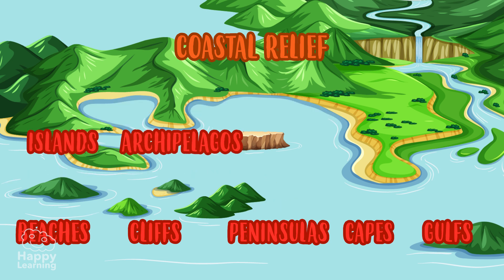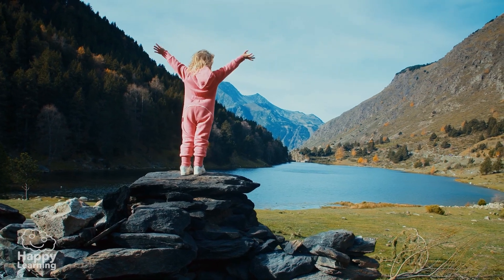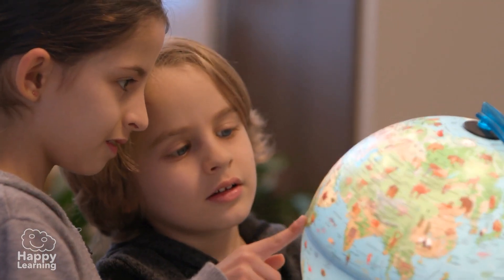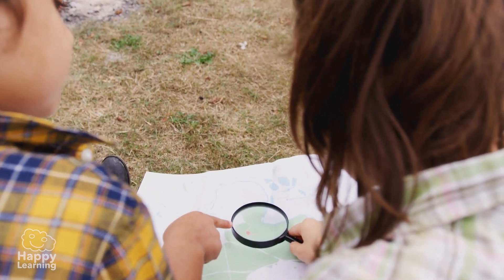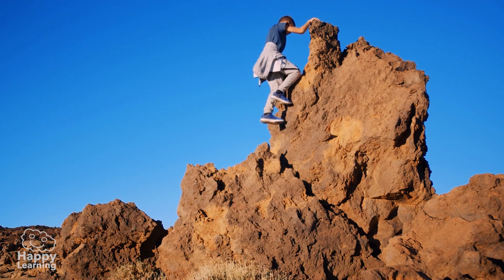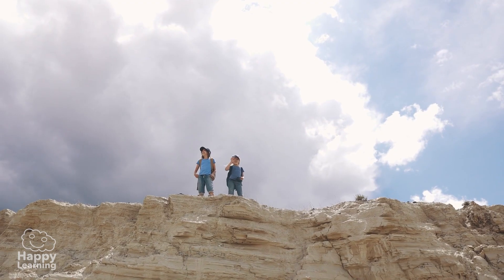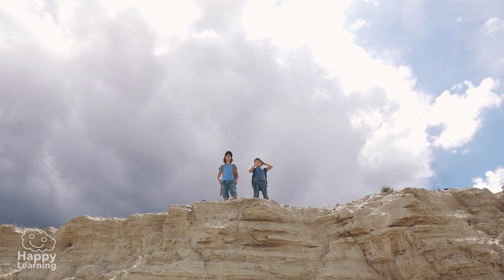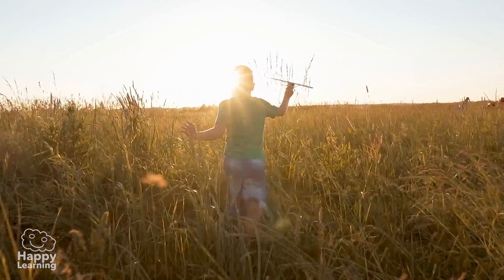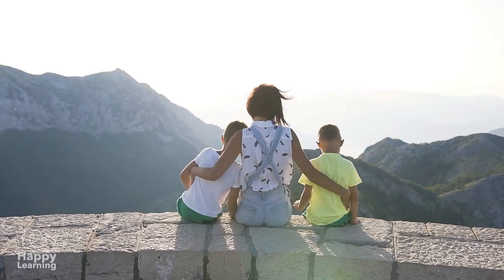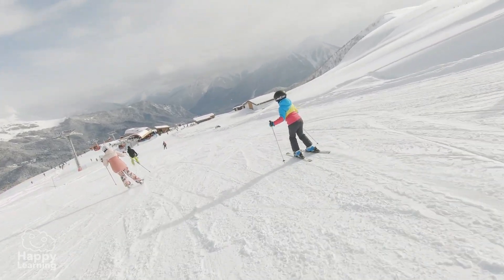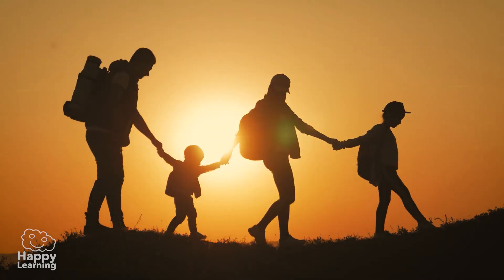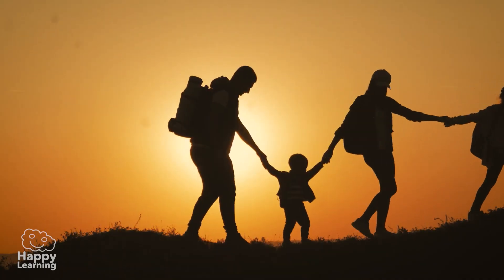Have you noticed how varied our Earth's reliefs are? The next time you see a physical map full of green and brown colours, remember that each of these relief shades refers to a different landscape — a place that nature has shaped over a long, long time, so that we can take care of it, respect it, and enjoy our wonderful planet. Goodbye friends, until the next video.